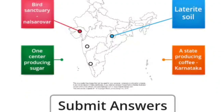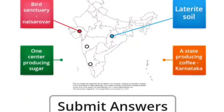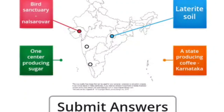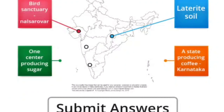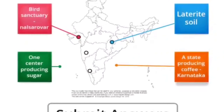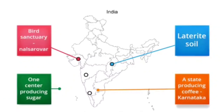Number three is the state producing coffee, which is Karnataka. Here we are going to show the region of Karnataka which produces coffee. Do you know where it is located? Drag this point and deliver it to Karnataka on the map.